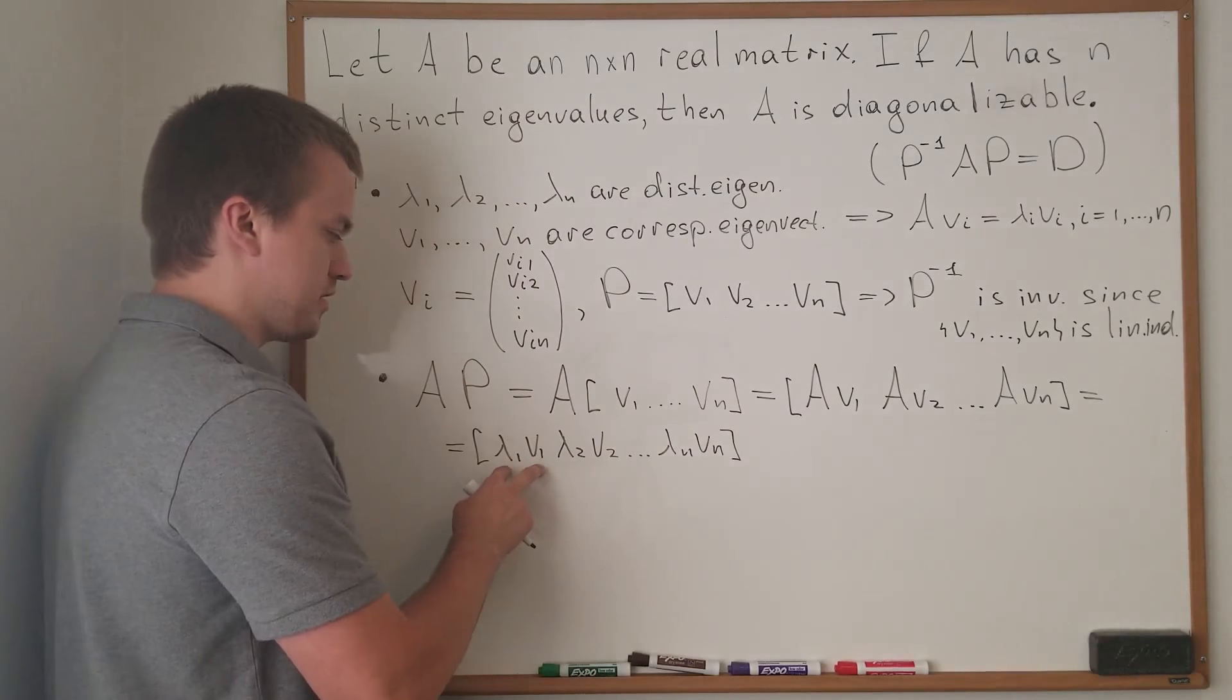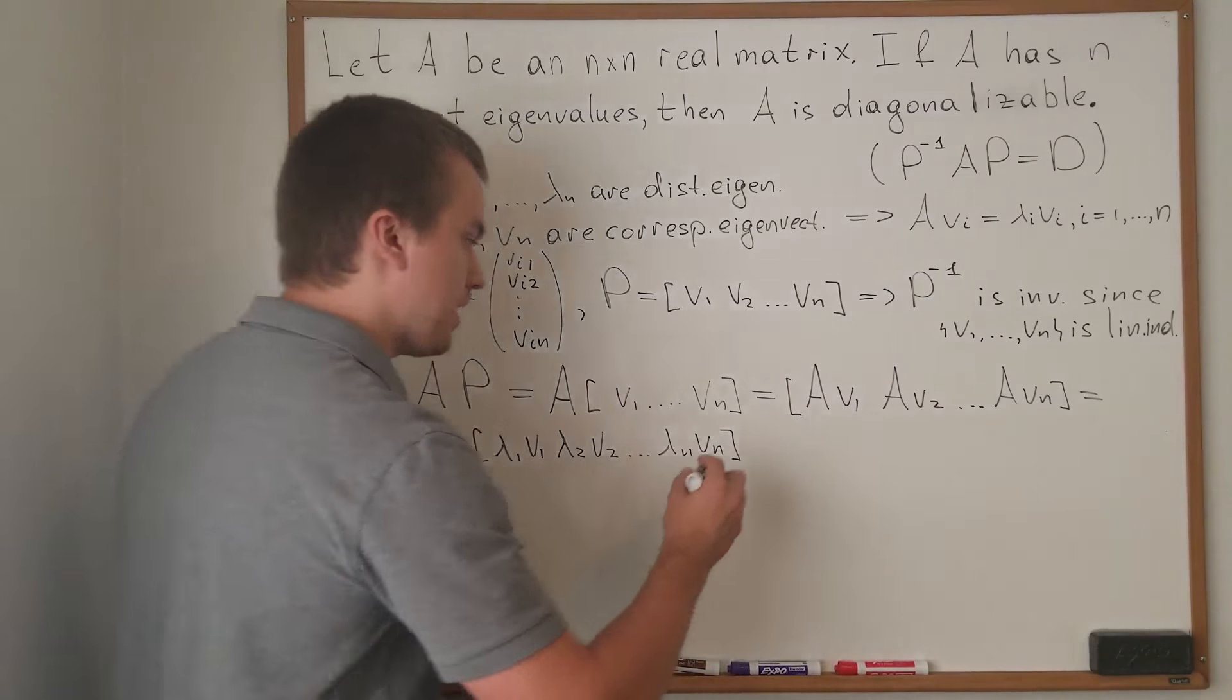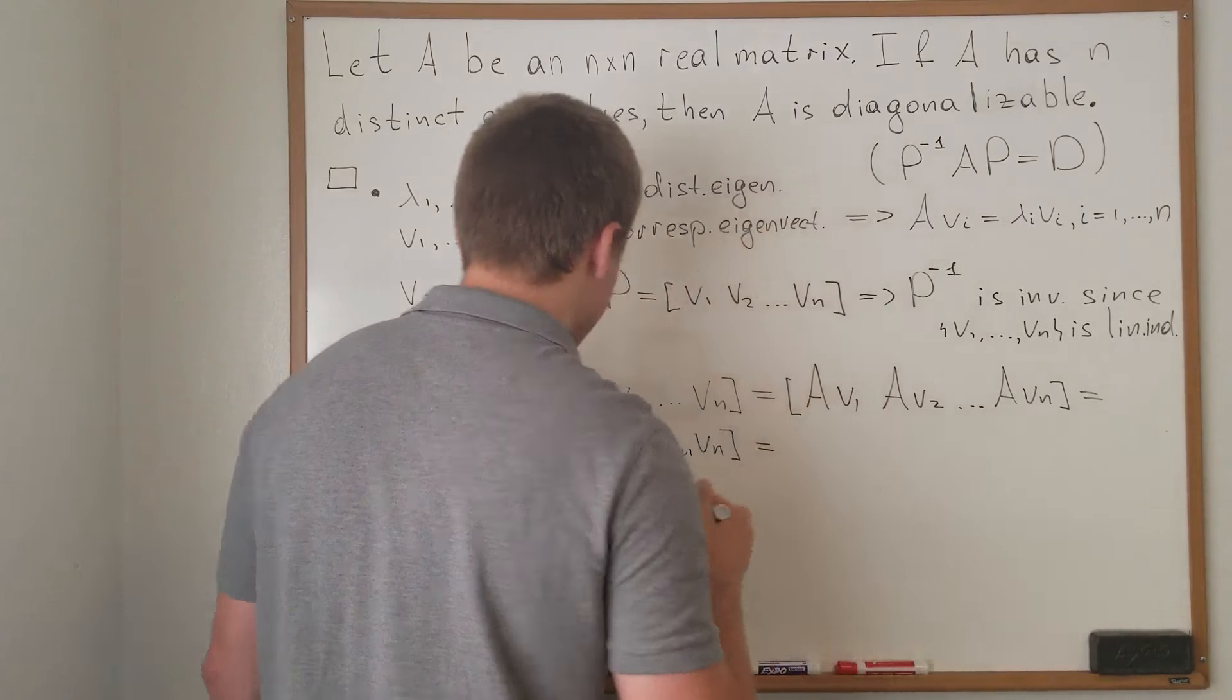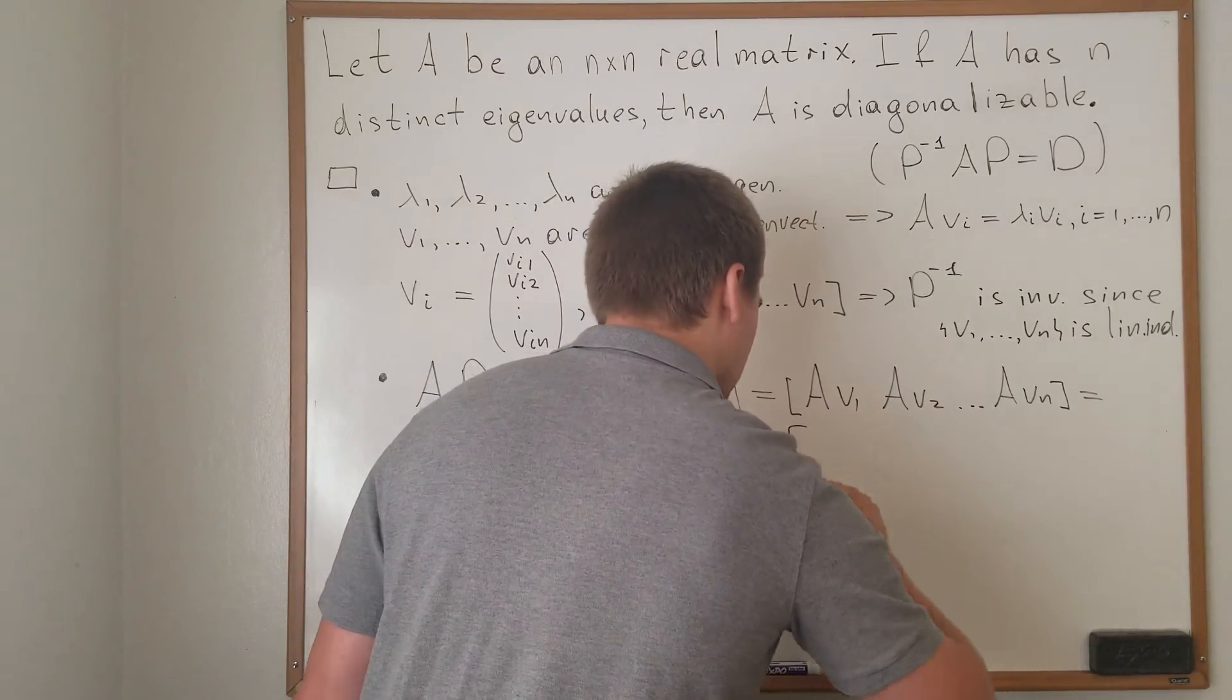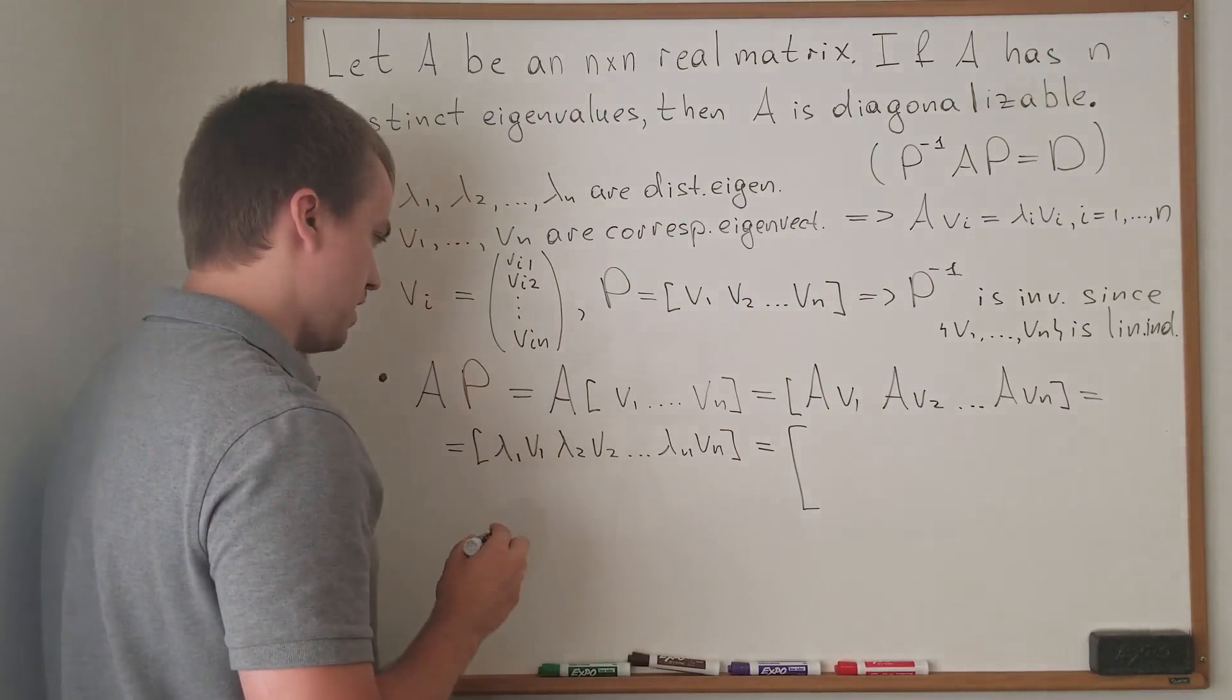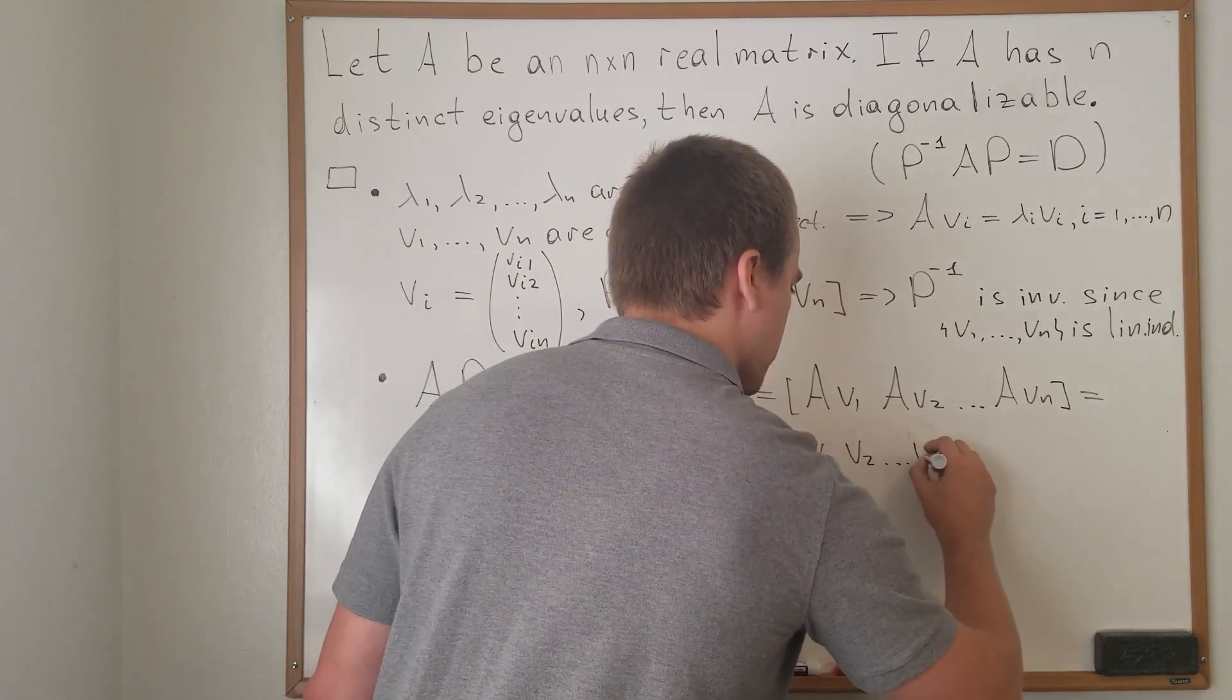Here I can see that this is my first column multiplied by constant lambda one. But then I can rewrite this as a multiplication of two matrices. And what I'm going to do, I'm going to write this down as V1, V2, Vn...